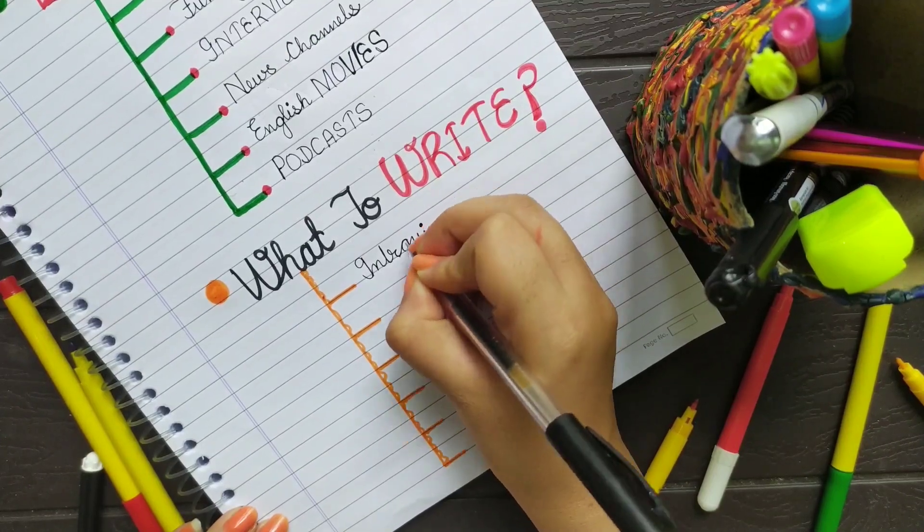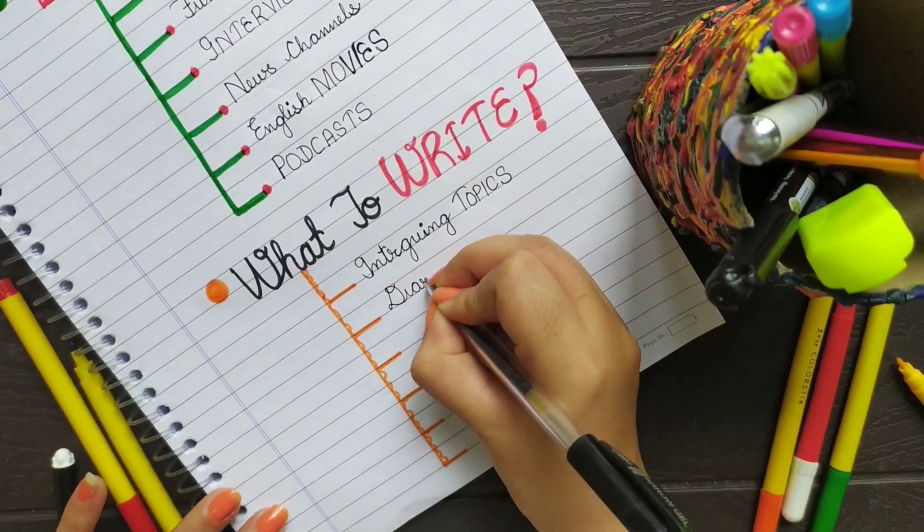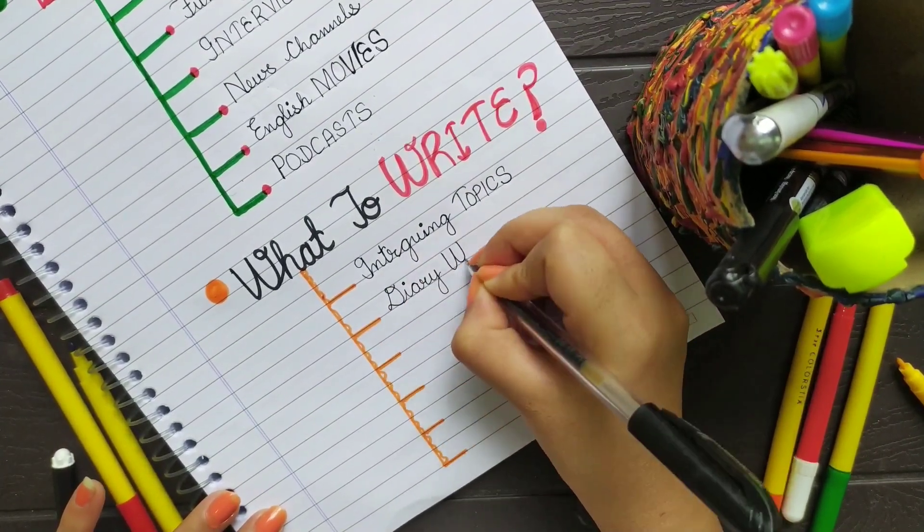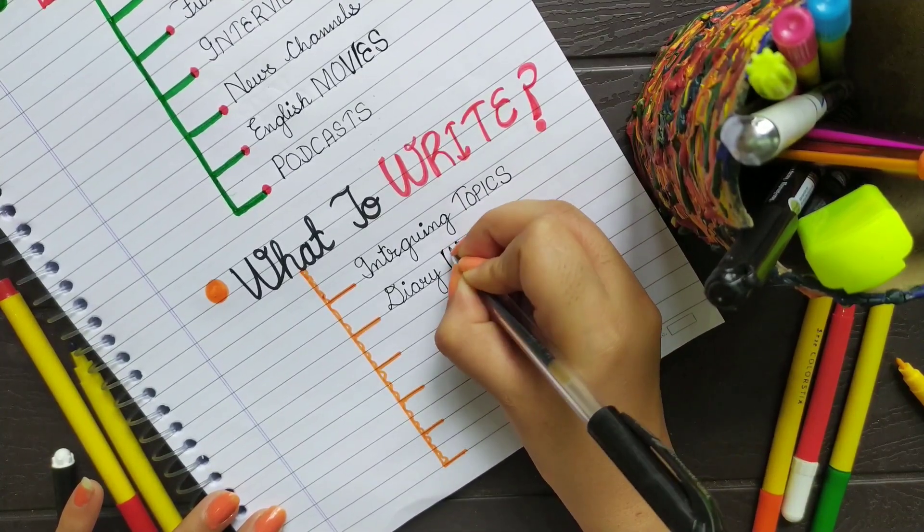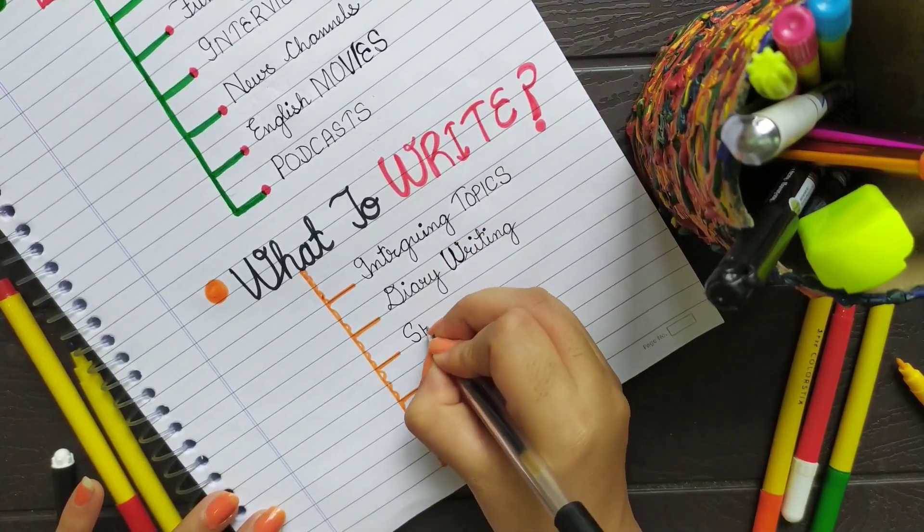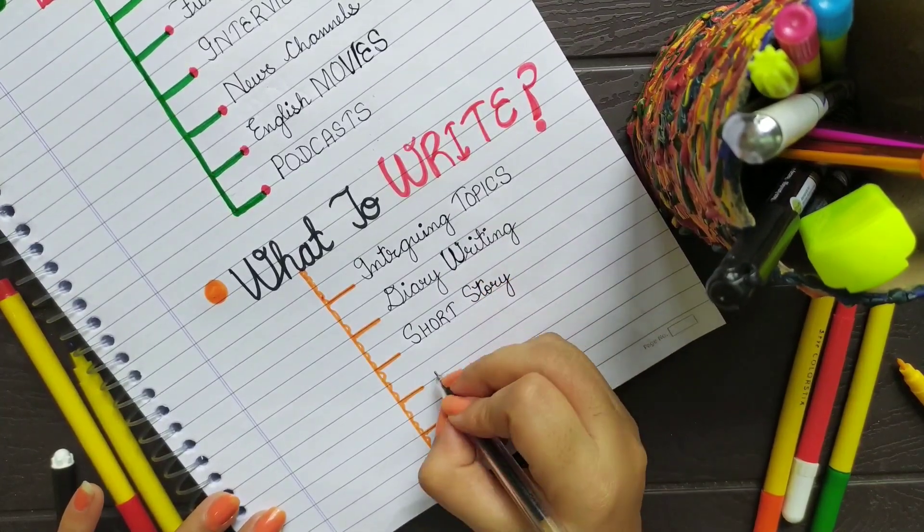You can write about intriguing topics such as fashion, yoga, etc., on a daily basis, nearly about 200 to 300 words, and exceed the limit gradually. You can also practice diary writing, your daily routine, or whatever you have experienced all day long.